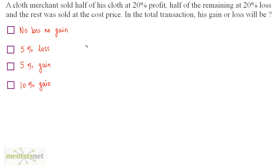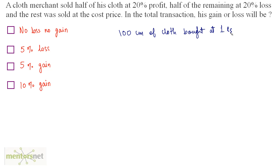A cloth merchant sold half of his cloth at 20% profit, half of the remaining at 20% loss, and the rest were sold at cost price. Find the total gain or loss. Let us assume there are 100 cm of cloth bought at Rs. 1 per centimeter, so the cost price per centimeter is Rs. 1.